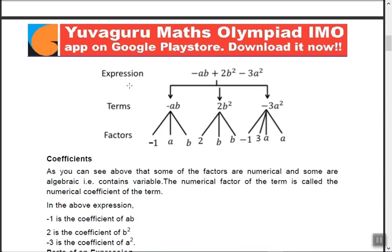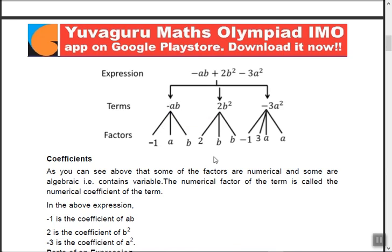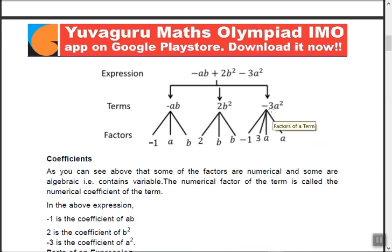Summary: an expression consists of terms separated by plus and minus. For example, in ab minus 2b squared minus 3a squared, the terms are: ab (with factors minus 1, a, and b); 2b squared (with factors 2, b, and b); and minus 3a squared (with factors minus 1, 3, and a squared). A factor divides the term exactly with no remainder — if there is a remainder, it is not a factor.